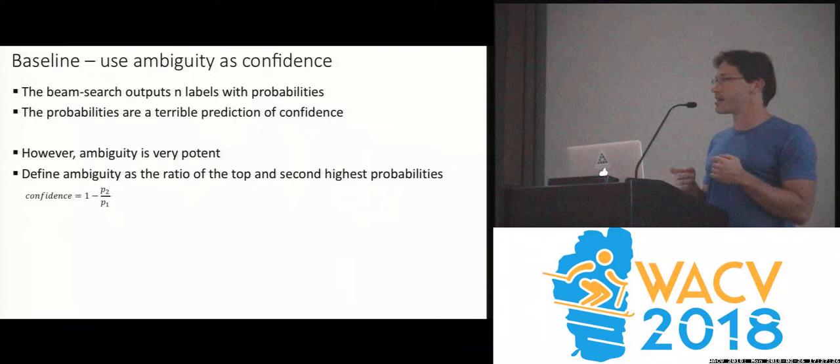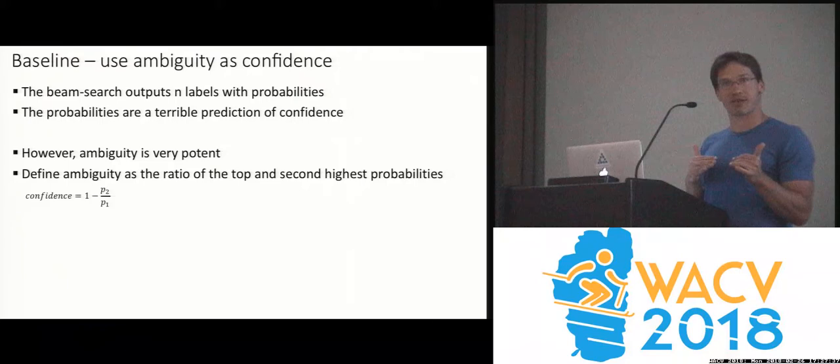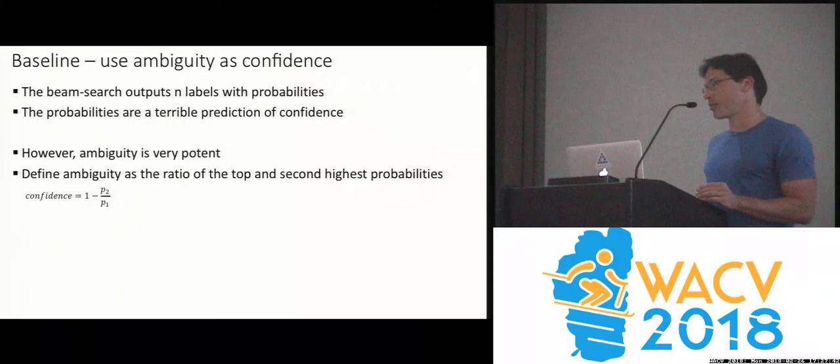Then we figured: let's take one more step and look at the ratio between the most confident reading and the second most confident reading. This ratio turns out to be very potent as a confidence measure in OCR systems — the first useful thing we found, not a great novelty but still very useful.